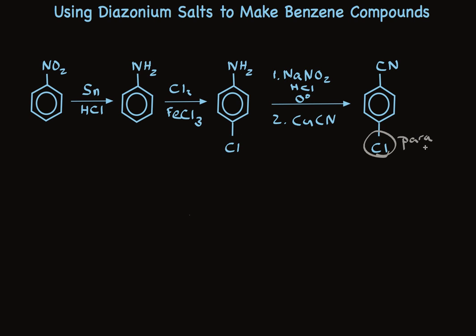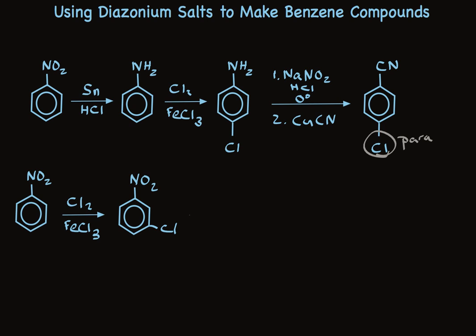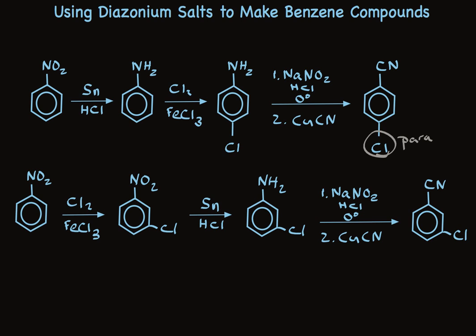On the other hand, look at this: if we chlorinate nitrobenzene, now we have a meta-director attached to the ring, and we end up with meta-chloronitrobenzene. Then we can do the reduction, and replace the NH2 group with CN, and now we have the meta-substituted product.